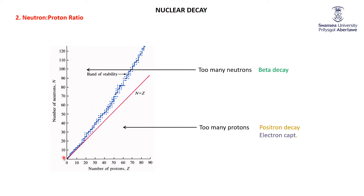The ideal ratio starts off with one to one, but then heads towards having more neutrons than protons. If an isotope is outside this band of stability with too many neutrons for the protons it has, it will be radioactive and decay via beta decay. If it has too many protons for the number of neutrons it has, then it will undergo positron decay or electron capture. The ratio starts at 1:1 and moves to about 1.1:1, and by the time you're up to the really heavy stable elements, it's about 1.5:1 — that is, one and a half times as many neutrons as protons for the isotope to be stable.